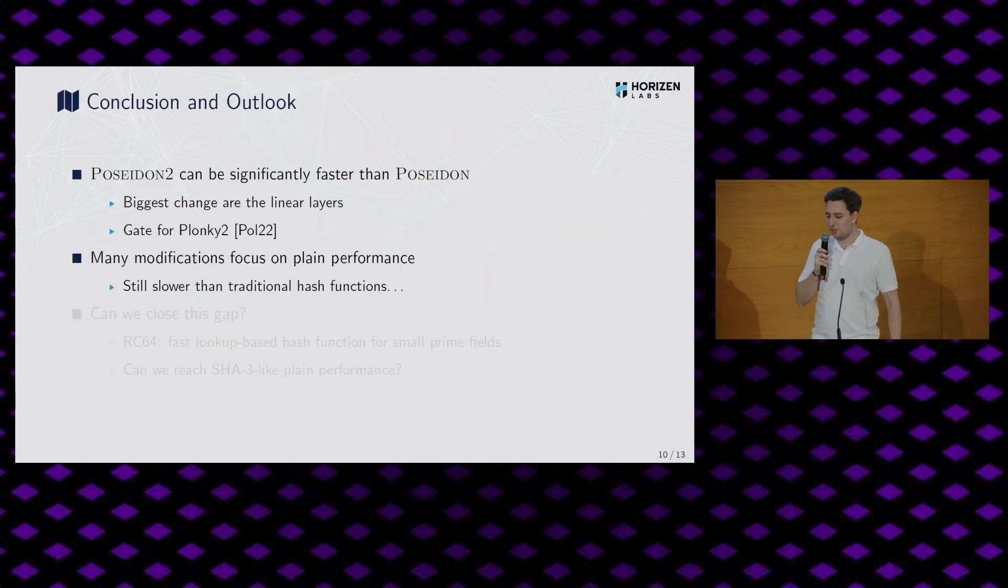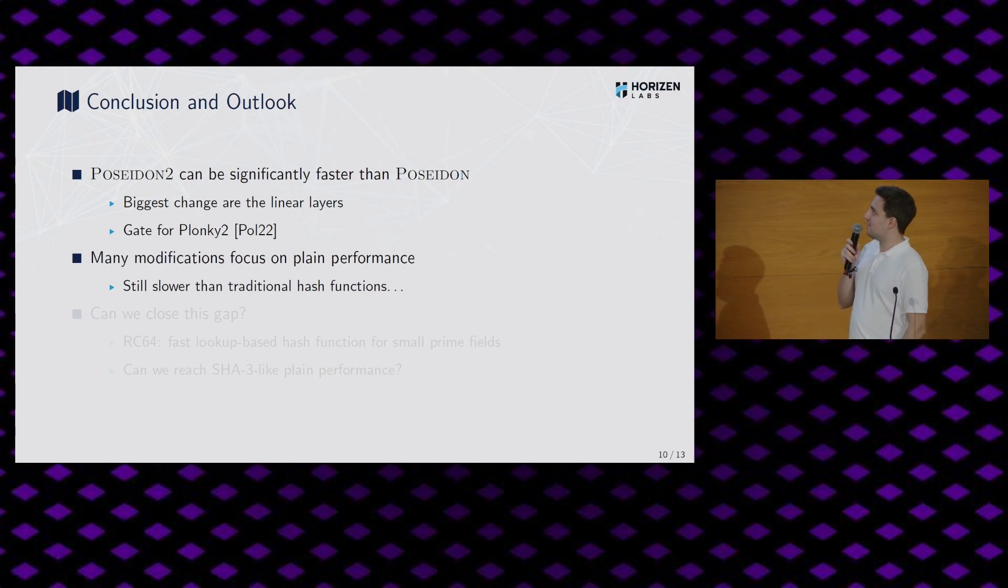All right. So before actually concluding the talk, let me also, besides the conclusion, let me give you also some outlook. So, well, first the conclusion, right? So Poseidon 2 is significantly faster than Poseidon. The biggest change is actually in the linear layers and we are also working or we are finished working also on a gate for Plonky 2, which essentially switches from Poseidon 1 to Poseidon 2. And what we found or what we've been seeing in the past, and this is now the outlook thing, is that there are many modifications also to the original Poseidon which focus on plain performance. So, for example, there's this modification using the circular MDS matrices, which doesn't change the specification of Poseidon, but makes it a lot faster. I think times two improvements, something like that, for a 16-word size. So it's pretty nice. And what we can learn maybe from that is that plain performance is also important. So not only circuit friendliness, but also plain performance. But with all these modifications, we are still not getting close to the traditional hash functions. So not to SHA3, let alone SHA2, which is even faster.